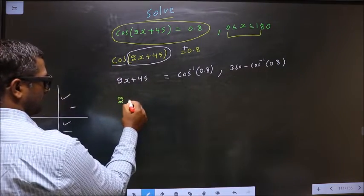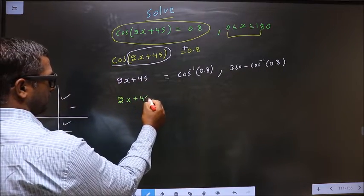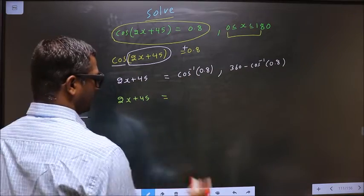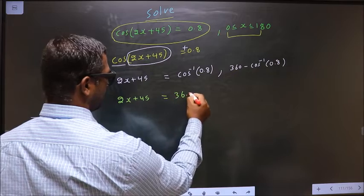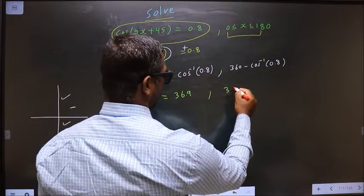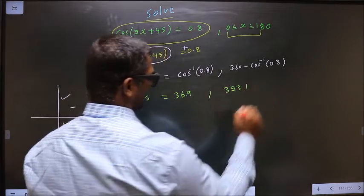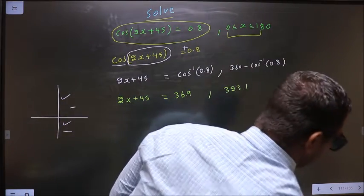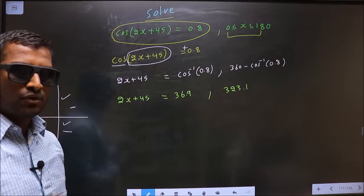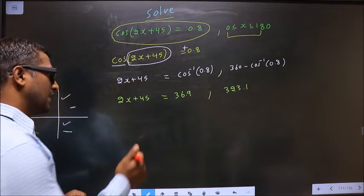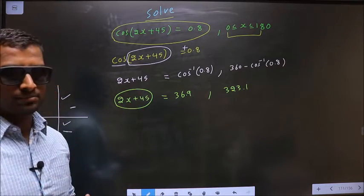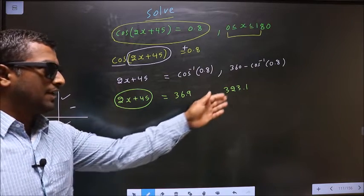Now 2x + 45 equals—calculate this, you should get 36.9. Calculate this, you should get 323.1. Now the question arises: in what interval should the values for 2x + 45 lie, and also shall I find any more angles or not? To answer that, we do this.